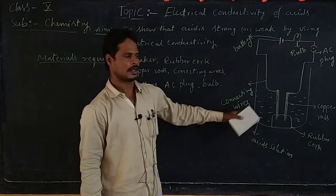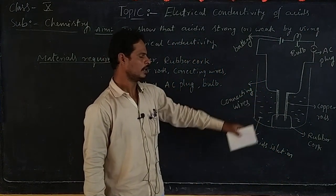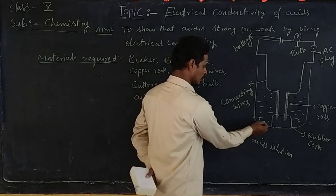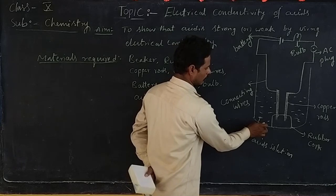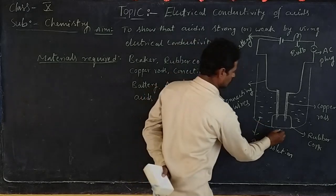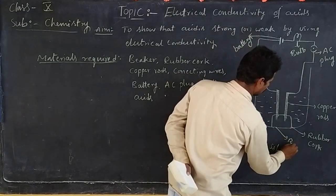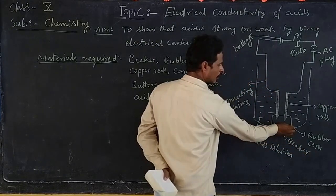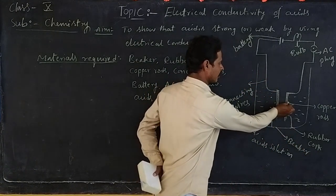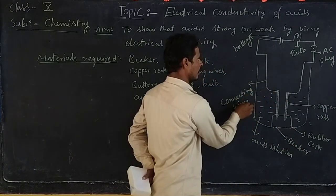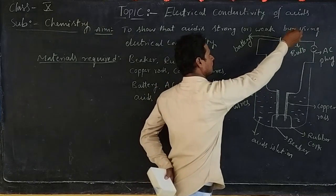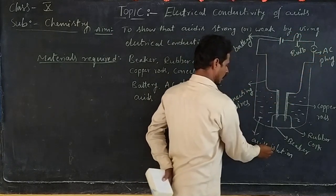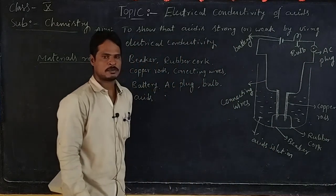Set up the apparatus as shown in the picture. The parts are: beaker, rubber cork, graphite rod, connecting wires, battery, bulb, AC plug, and acid solution.